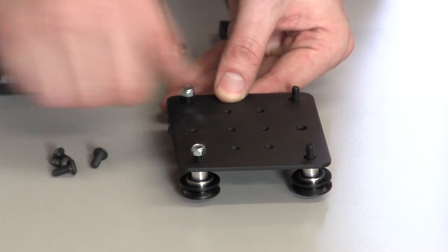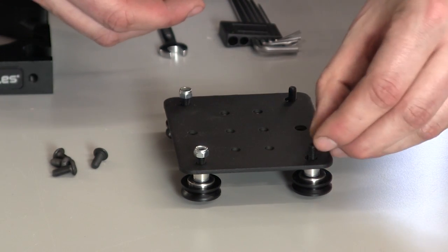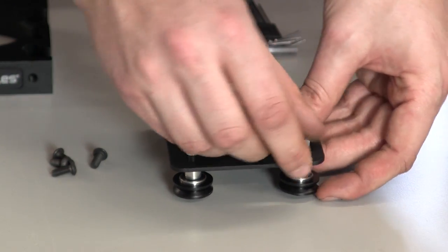Start by finger tightening the nylock nuts. Then put the eccentric nuts in, making sure that the shoulder faces the plate so that it can get seated in the larger hole.